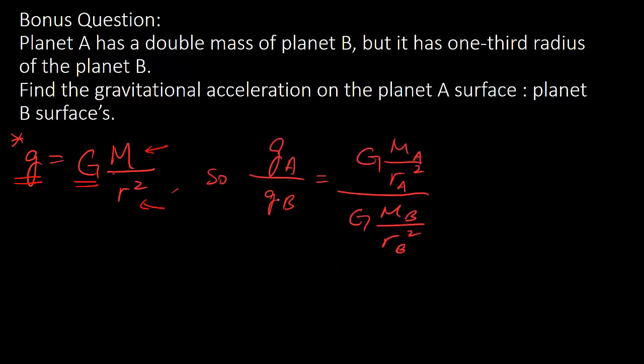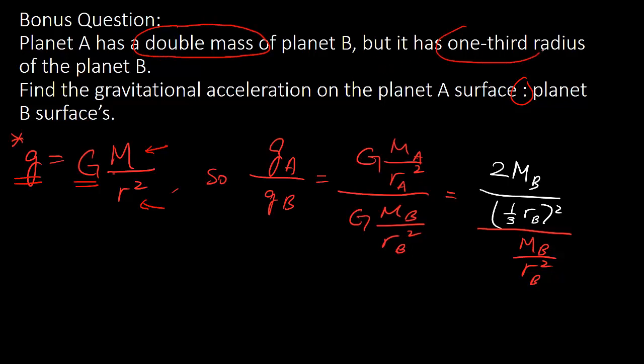The question asks you to find the ratio of the gravitational acceleration on planet A over planet B. So what you do is, once again, you see, given equation, and you can find, you can write this, and also the same for B at the bottom of the fraction. And once again, you look at what is described in the question. It said, A has a double mass of planet B while the radius is only one third. So what you do is, you change M A and R A accordingly.